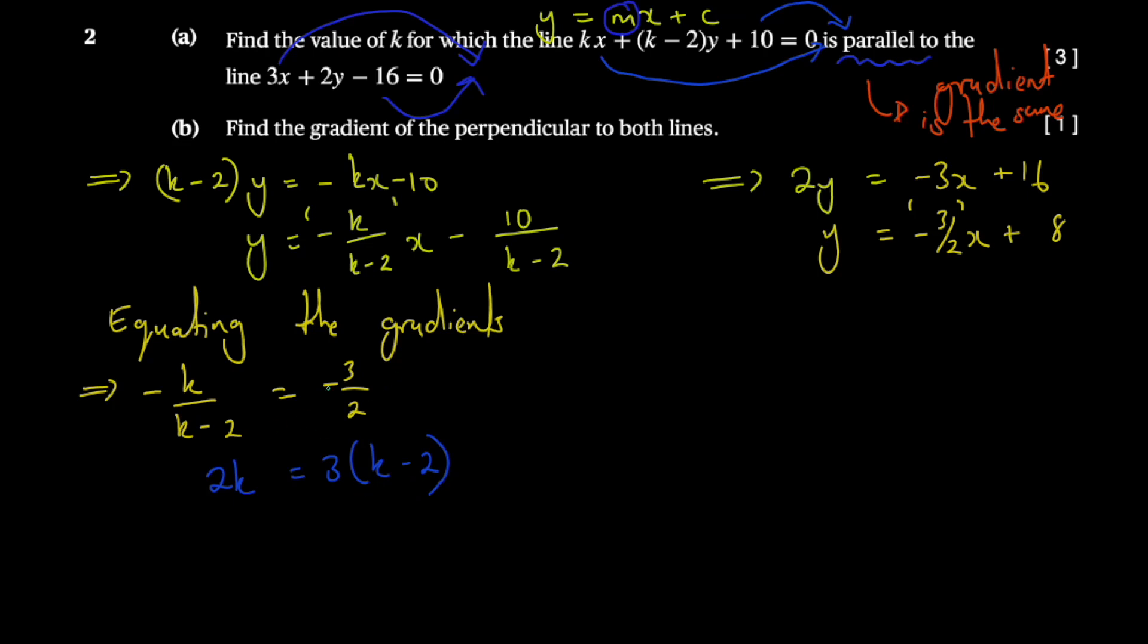This is 3k - 6. What we're going to do is to have this 2k visit the other side so that we can avoid negatives. You would have 3k - 2k = k, then equal to 6. So that's essentially the value for k.